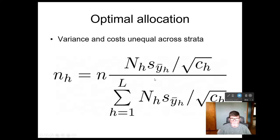And finally, the optimal allocation looks similar again. We've still got NH times S Y bar H, but now we divide each of those quantities by the square root of the cost of sampling a unit in that stratum CH. And then again, it's the same thing. We normalize that and multiply by N. And those are the formulas for finding our optimum allocation of sample units across stratum.